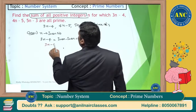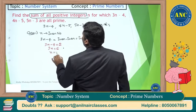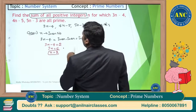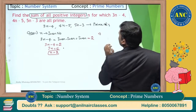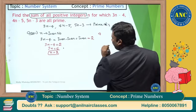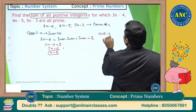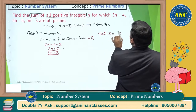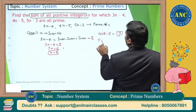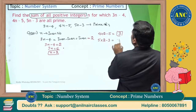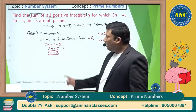So 3n minus 4 equals 2, giving 3n equals 6, so n equals 2. Now we check: 4n minus 5 = 4(2) minus 5 = 8 minus 5 = 3, which is prime. And 5n minus 3 = 5(2) minus 3 = 10 minus 3 = 7, also prime.